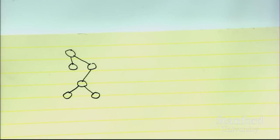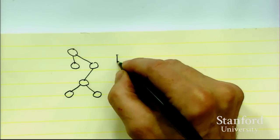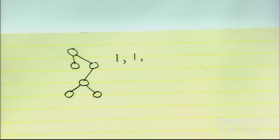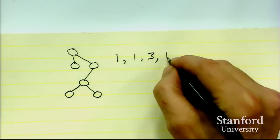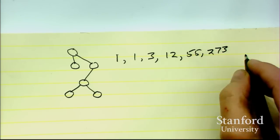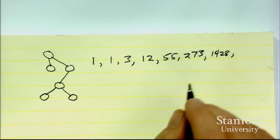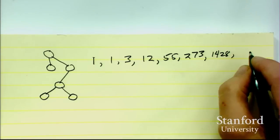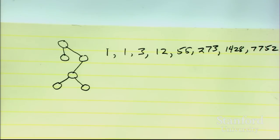I can write down the number of ternary trees. If there are zero nodes, there's one ternary tree. One node: one. Two nodes: three — because there's a root and then the second node must go left, middle, or right. Three nodes: twelve. Four nodes: fifty-five. Five nodes: two hundred seventy-three. You can always find these on the Online Encyclopedia of Integer Sequences and carry it on.